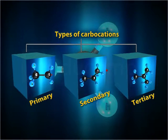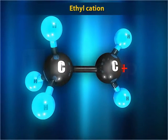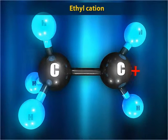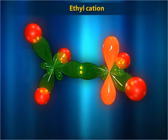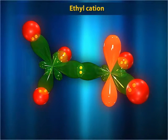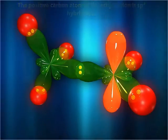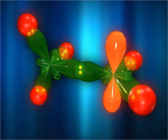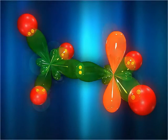Let us study about them one by one. First is the primary carbocation — the ethyl cation — which contains the positive carbon atom linked to 2 hydrogen atoms and 1 carbon atom of a methyl group. The positive carbon atom of ethyl cation is sp2 hybridized. It contains 3 sp2 hybridized orbitals and 1 unhybridized p orbital. The 3 sp2 hybridized orbitals form sigma bonds: 2 with 2 hydrogen atoms and the third one with the carbon atom of the methyl group.